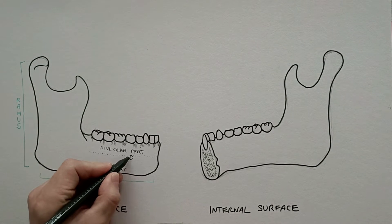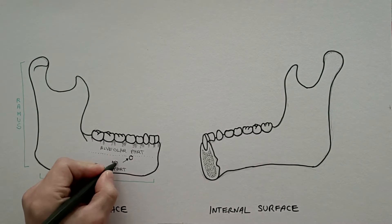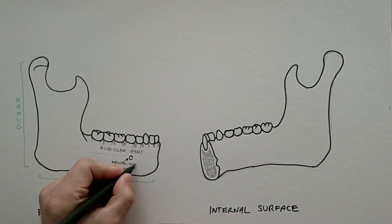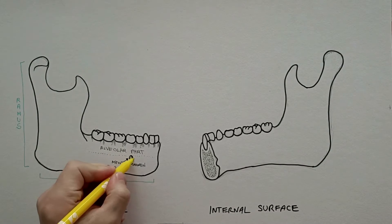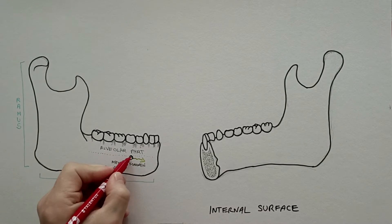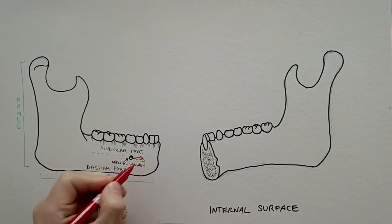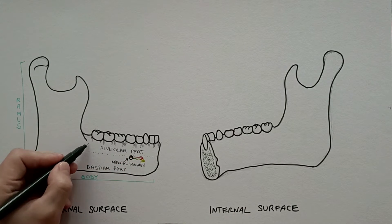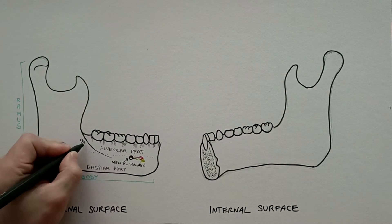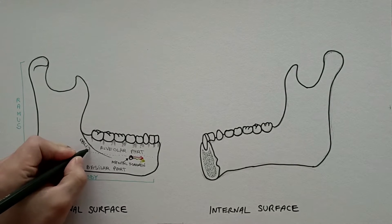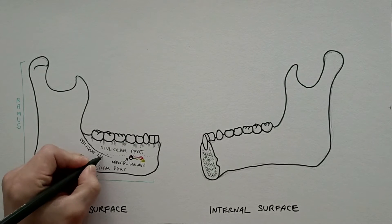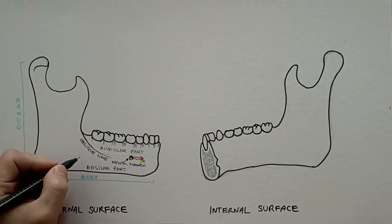The mental foramen is a foramen located on the lateral body surface, below the premolar region. This foramen transmits the mental vessels and nerve. The oblique line is a weak eminence that passes from the root of the ramus to the area at the rear of the mental foramen.